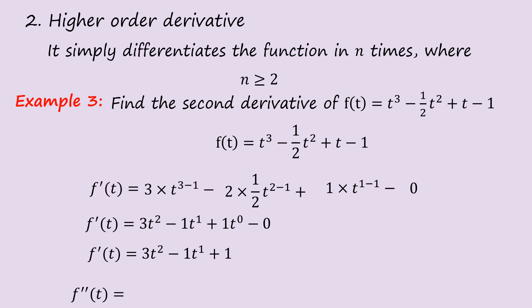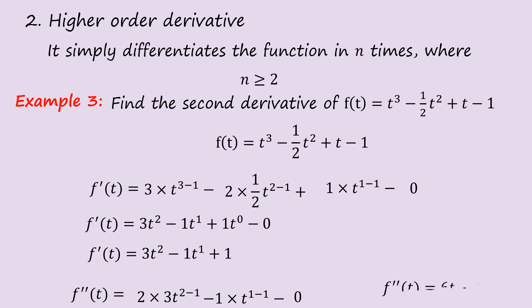Now let's differentiate a second time to find the second derivative. The 2 comes down from 3t² to give 6t, and the 1 from −t gives −1·t⁰ = −1, while the constant 1 differentiates to 0. Therefore, f″(t) = 6t − 1.